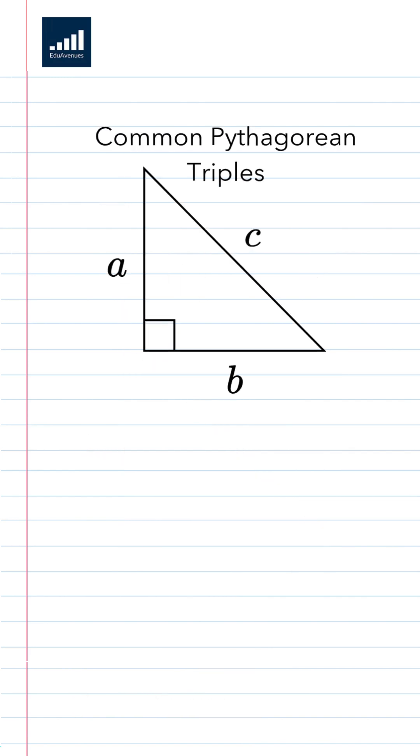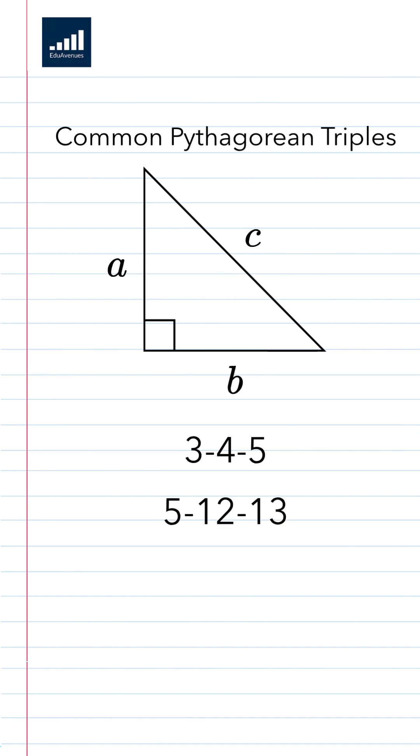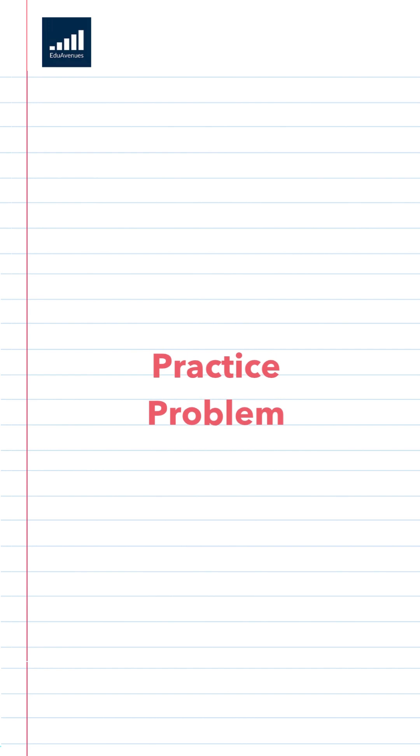But some number combos called Pythagorean triples come up all the time, like 3, 4, 5; 5, 12, 13; 7, 24, 25; and 8, 15, 17. Multiples of these also work. Now let's try a practice problem.